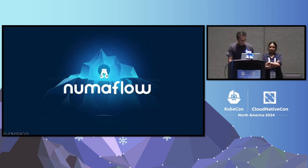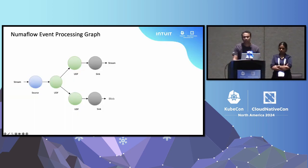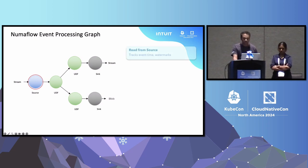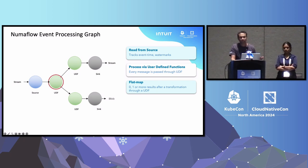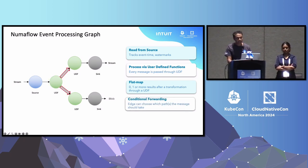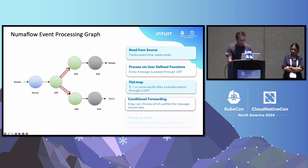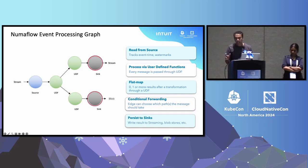Thank you, Hema. Numaflow is a directed compute graph — agnostic to Kafka or any system. You read something from a source, which could be any streaming or unbounded system. Users can inject their own user-defined functions: flat maps, complex functions, even an LLM. We also support conditional forwarding where you make a runtime decision to choose path A versus B or both. Finally, it goes to a sink — the final vertex — and Numaflow guarantees between source and sink that no data will ever be lost or corrupted.